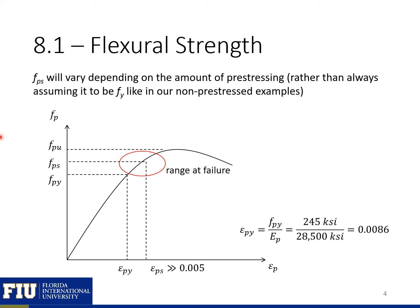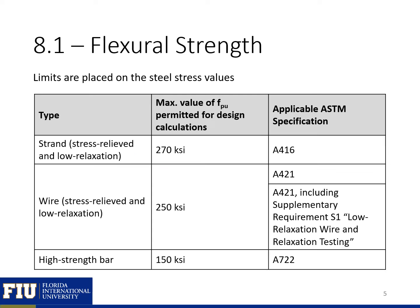With pre-stressing, we need to calculate the stress in the strand at the time of failure, at the nominal flexural capacity — this is F_ps. This F_ps is typically going to be in the range between our yield stress and the ultimate stress in the strand, so typically between 243 and 270 KSI.